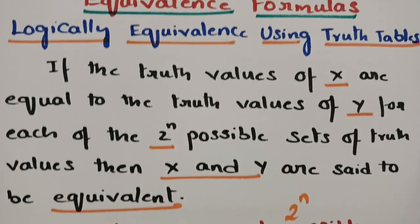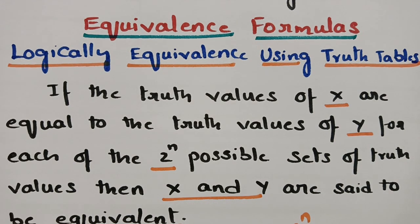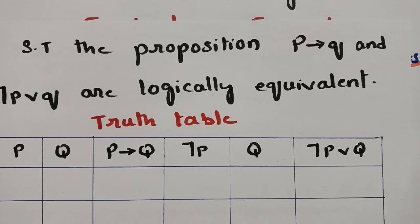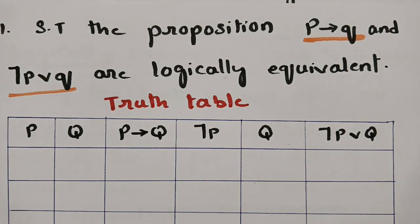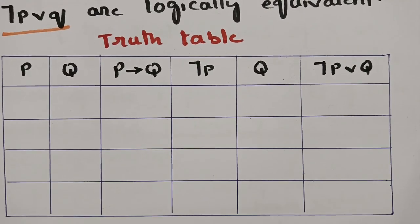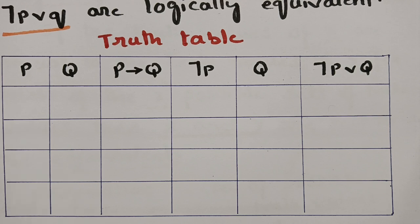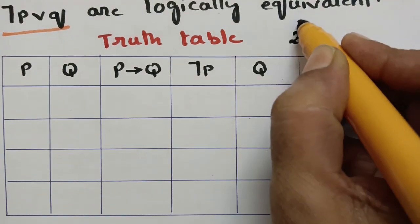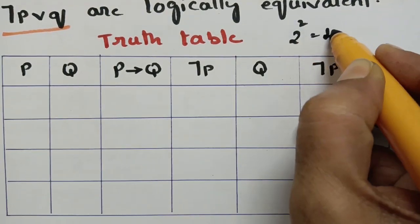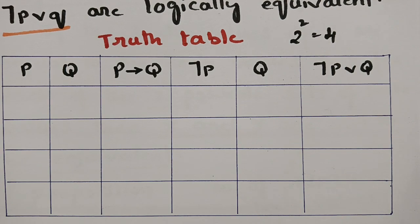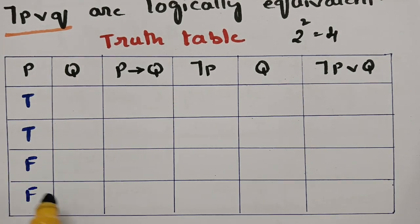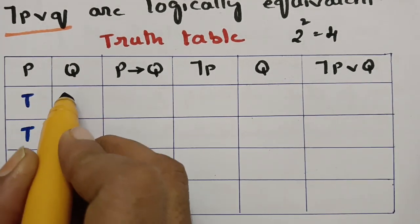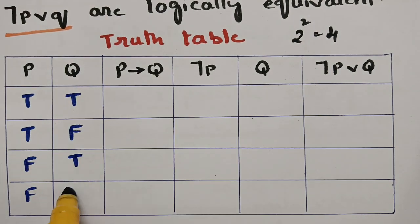For Example 1, we have to show that p implies q and negation p or q are logically equivalent. Since there are two propositions p and q, the number of possible truth values is 2^2 = 4. So the four input combinations for p and q are: true-true, true-false, false-true, and false-false.